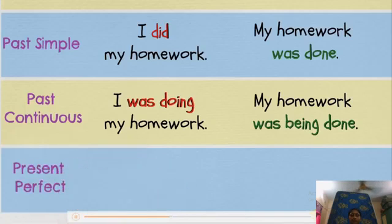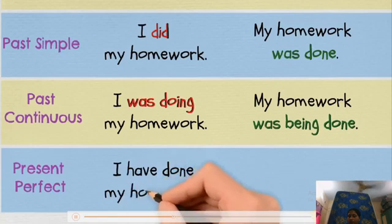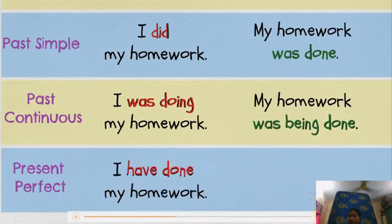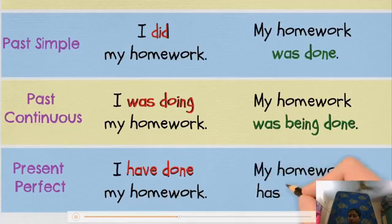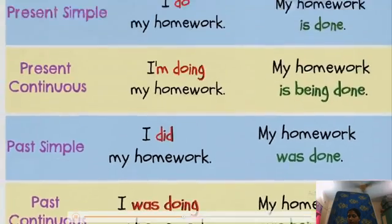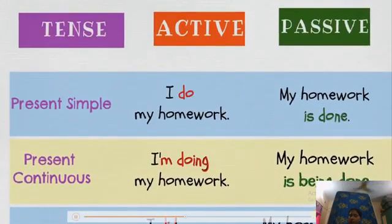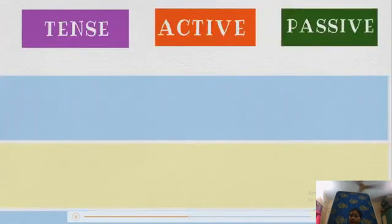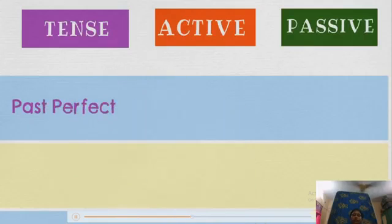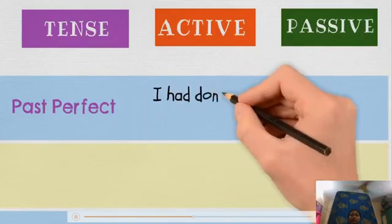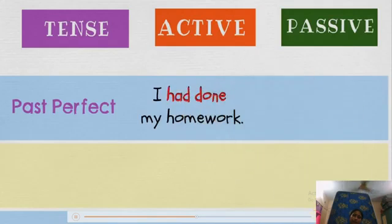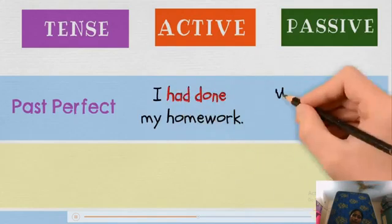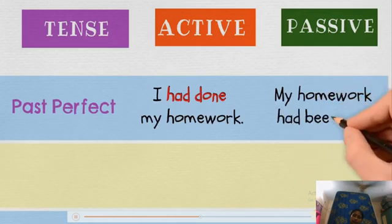Present perfect — Active: I have done my homework. Passive: My homework has been done. Past perfect — Active: I had done my homework. Passive: My homework had been done.